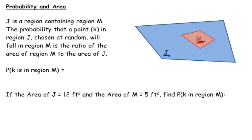So P(K), the probability that K is in region M, would look like this. I would take the area of M and divide it by the area of section J, of region J.